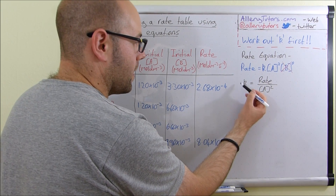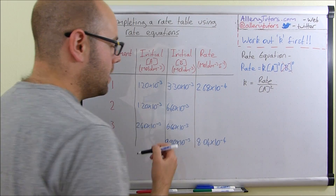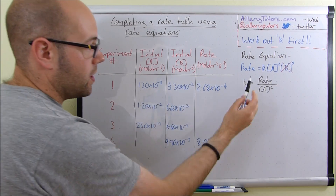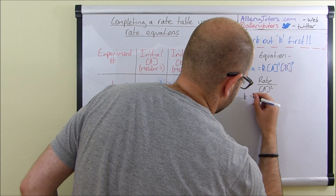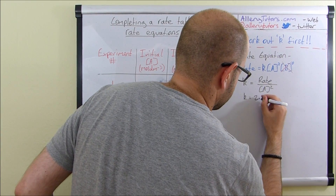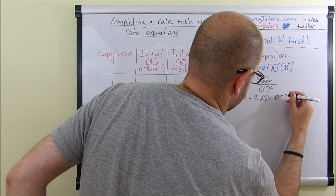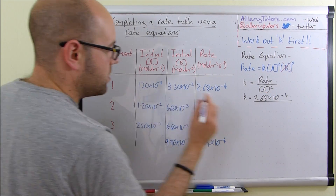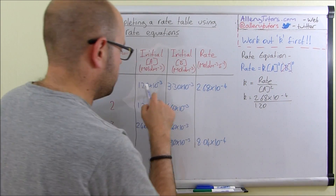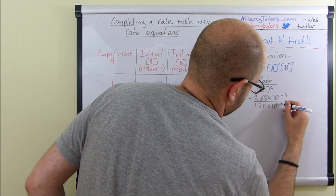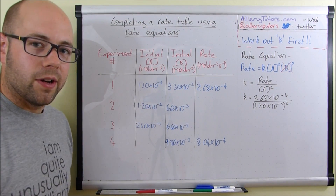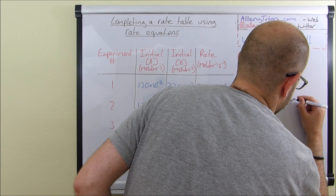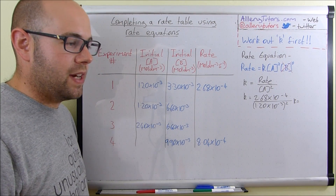We need to pick a set of data where we know both the rate and the concentration of A. The only complete data set is experiment one, so: k = (2.68 × 10⁻⁴) divided by (1.20 × 10⁻³)². Put that into a calculator and k should be 186.1.